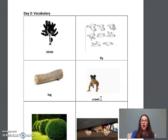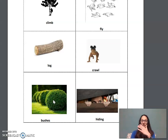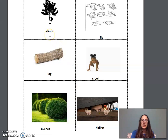This is another word: crawl. Look at the picture. This baby cannot walk. She is going to crawl. Repeat after me: crawl. Two more. This word says bushes. I see one, two, three, four bushes. It's like a small round plant. Say it after me: bushes. And in this picture, I see a person hiding. Repeat after me: hiding. They don't want someone to find them. Let's read the words together: climb, fly, log, crawl, bushes, hiding. Great job.